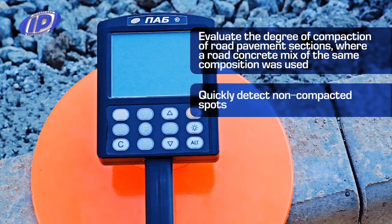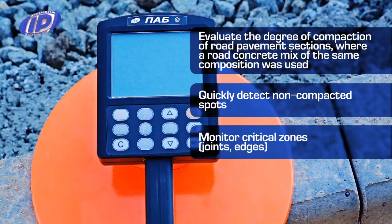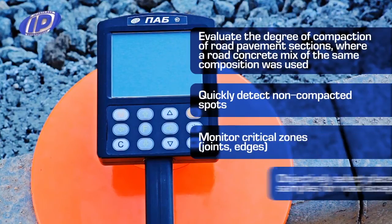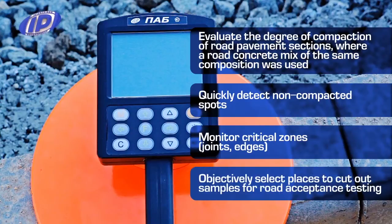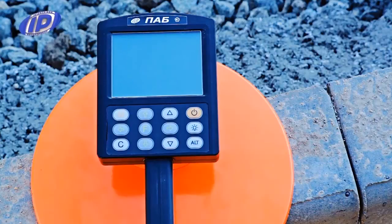2. Quickly detect non-compacted spots. 3. Monitor critical zones, joints, edges. 4. Objectively select places to cut out samples for road acceptance testing.